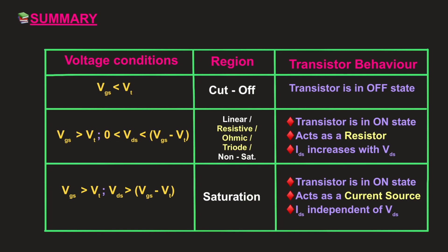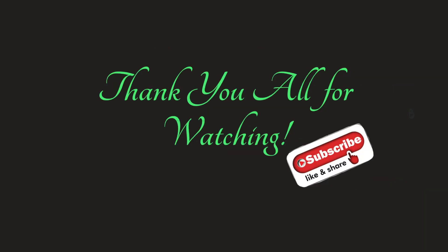Certain points are highlighted in yellow inside the tabulation. We should understand why the linear region is also called the resistive, ohmic, or triode region, and how a FET transistor acts as a variable voltage-controlled resistor in the linear region and as a constant current source in the saturation region. We will also discuss the velocity saturation effect and see the ideal I-V characteristics of the MOSFET transistor to understand how ID varies linearly in the linear region and becomes constant in saturation. All of these will be covered in separate videos.